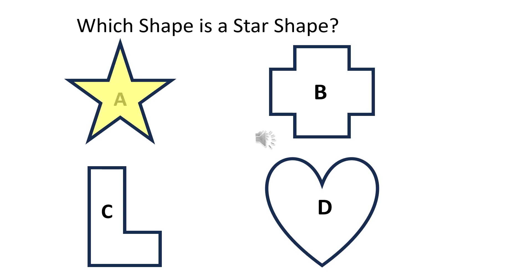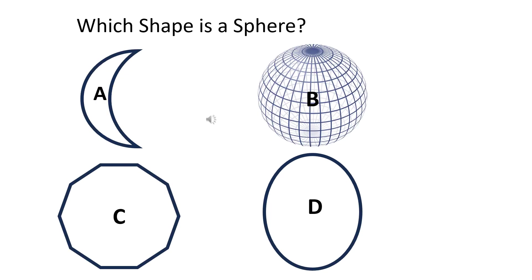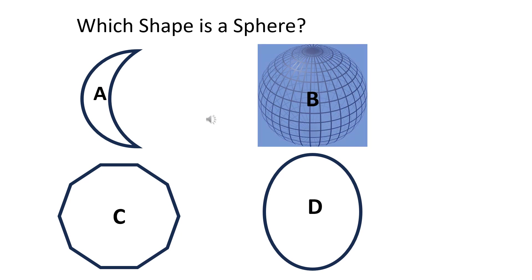The right answer is D. Which shape is a hexagon? The right answer is B.